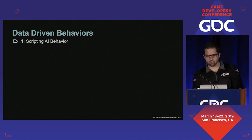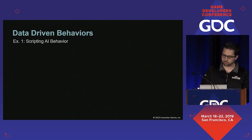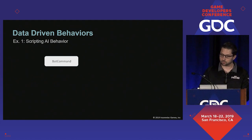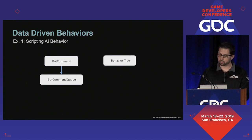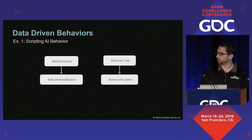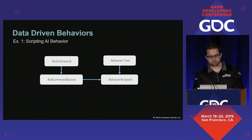Rather than have a bunch of behavior tree nodes that respond to designer scripting, we made a more data-driven solution. Script will begin by creating what we call a bot command, and these commands go into a bot command queue. When the queue exists, the behavior tree has a node which instantiates behavior scripted. This behavior pulls commands one at a time out of the queue and uses them to create sub behaviors or states.